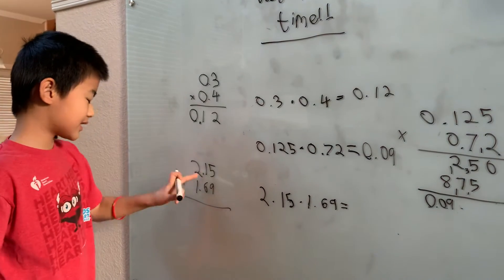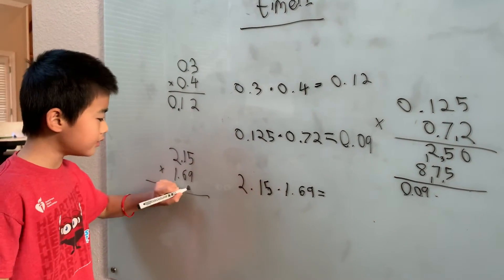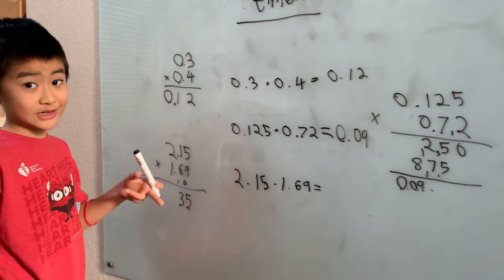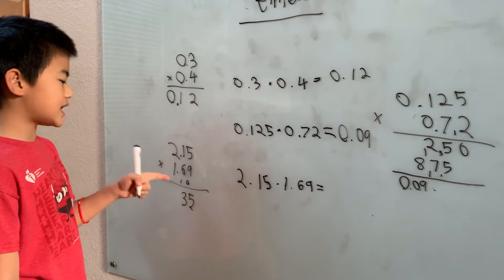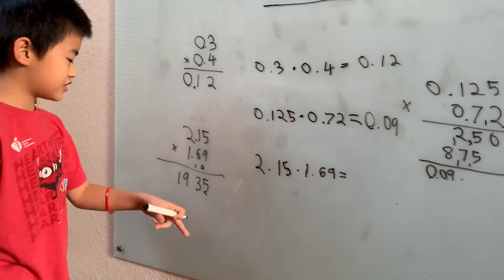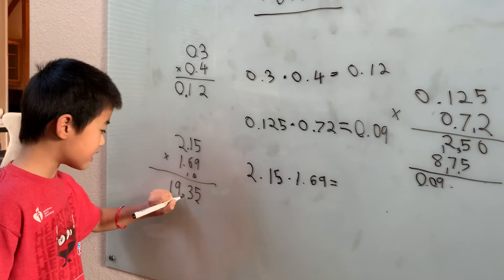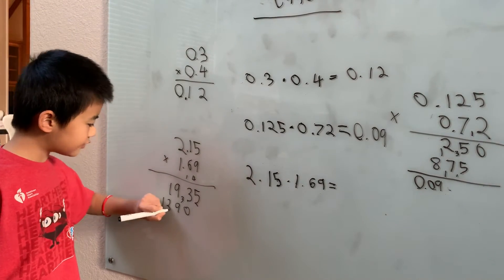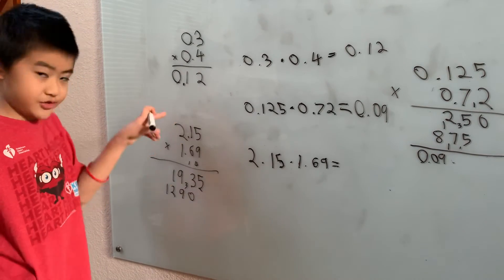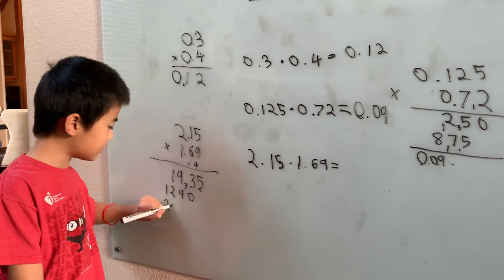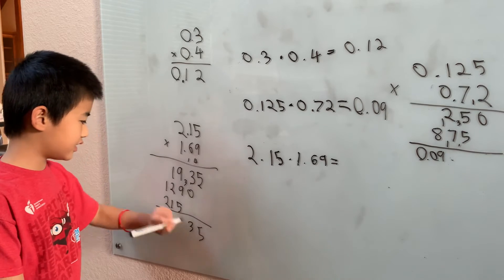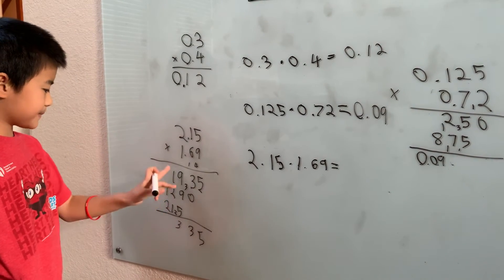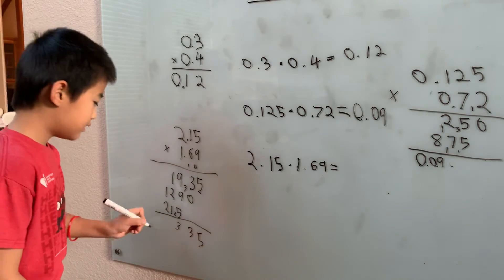So: five times nine is 45, one times nine is nine plus four is 13, two times nine is 18 plus one is 19 — giving 1935. Then six times five is 30, six times one is six plus three is nine, six times two is 12 — giving 1290. Then one times 215 is 215. Adding: 1935 plus 12900 plus 21500 gives us 36335.